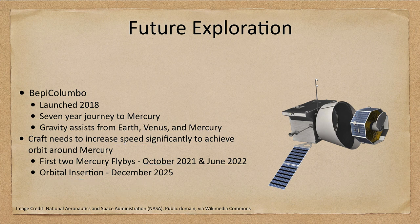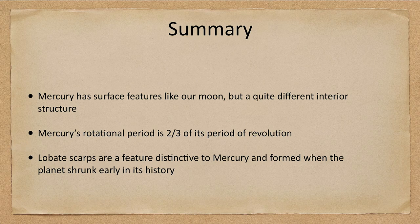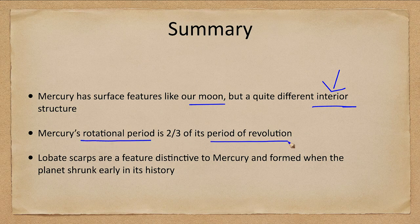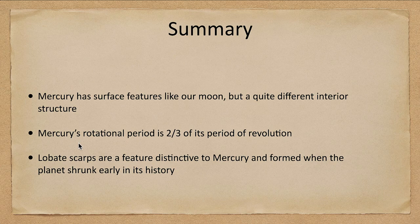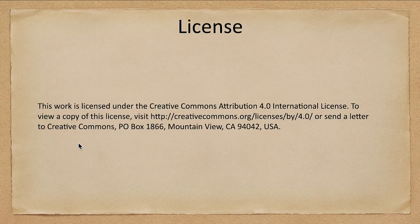To summarize: Mercury has many surface features that make it look like our Moon, but very different interior structures. We looked at how the rotational period and period of revolution are synchronized in a two-thirds ratio, and we discussed lobate scarps as a feature distinctive to Mercury, likely formed when the crust shrank early in its history. That concludes this lecture on Mercury. We'll be back next time for another topic in astronomy — have a great day, everyone.